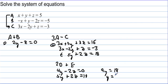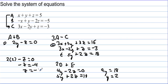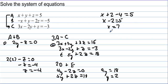So y equals 2. Plugging y equals 2 back into equation D: 2 times 2 minus z equals 0, so negative z equals negative 4, meaning z equals negative 4. Now back to the original top equation: x plus 2 minus 4 equals 5, so x minus 2 equals 5, giving x equals 7. The solution is 7, 2, negative 4.